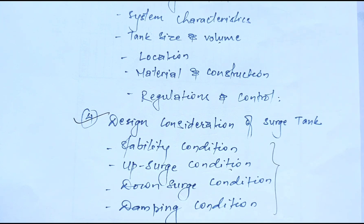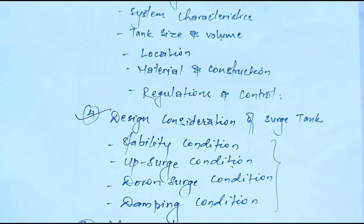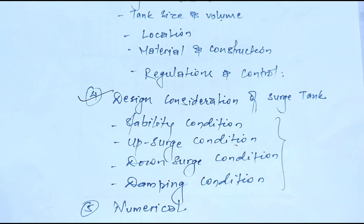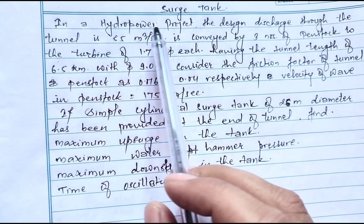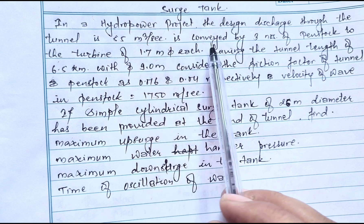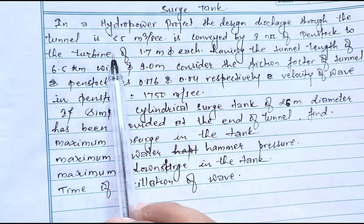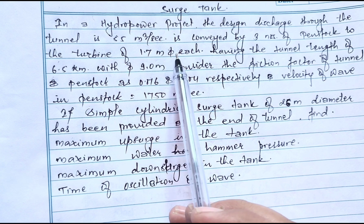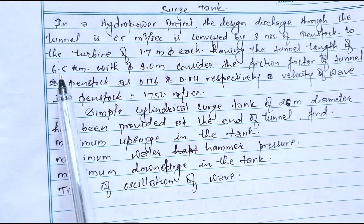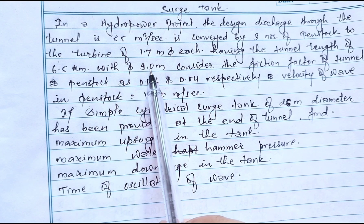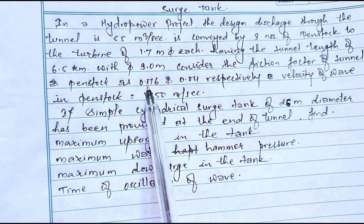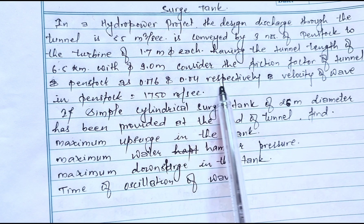We will also check these points in the numerical problem. Now let's move on to the numerical problem related to the surge tank. In a hydropower project, the design discharge through the tunnel is 55 cubic meters per second, conveyed by three penstock pipes of 1.7 meter diameter each, with a tunnel length of 6.5 kilometers and a tunnel diameter of 9.0 meters.